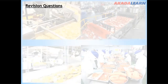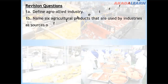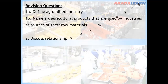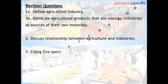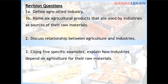Revision questions: Define agro-allied industry. Name six agricultural products that are used by industries as sources of their raw materials. Discuss the relationship between agriculture and industries. Citing five specific examples, explain how industry depends on agriculture for their raw materials.